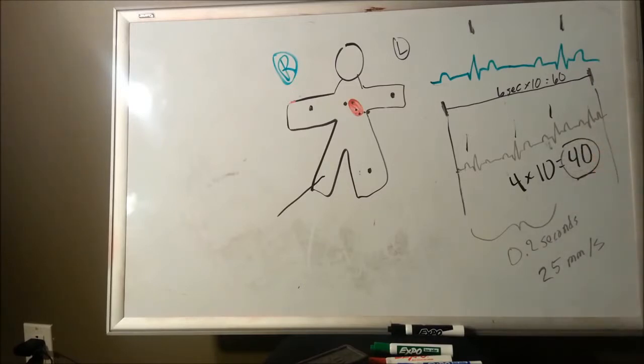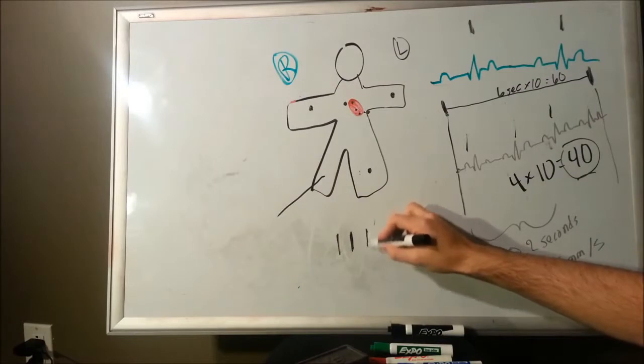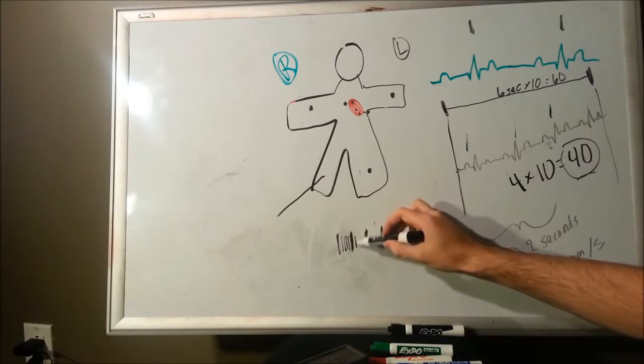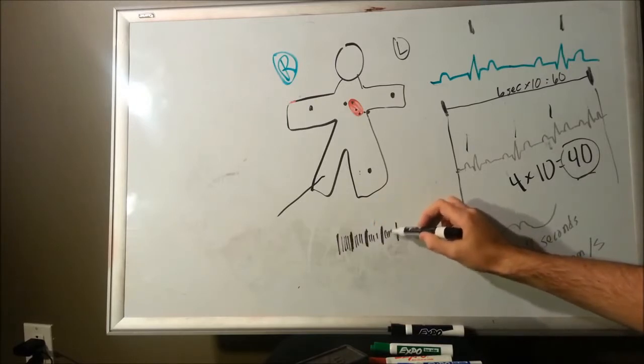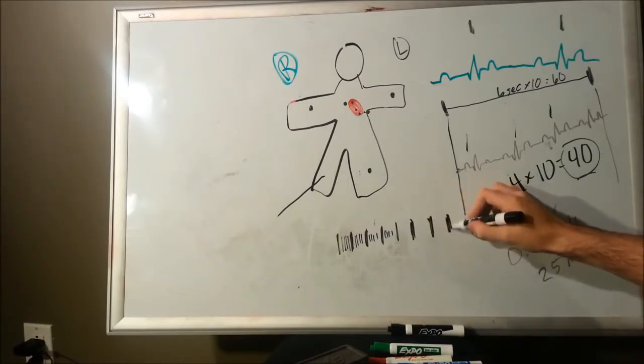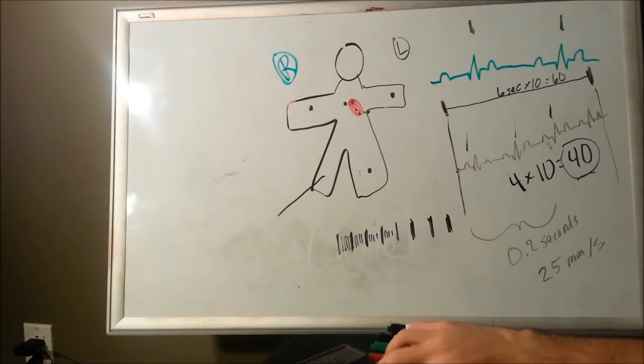Alright, so that's one way, is you can use little notch marks. That's probably the easiest way. Another way is to use kind of a remembering tool that a lot of people that read EKGs remember. So, again, you have these heavy dashed lines. Then you've got the smaller lines. I'm going to bring out the heavy lines a little more. You don't need to worry about the smaller dashed lines. It's just the heavy lines that you use for the heart rate determination.